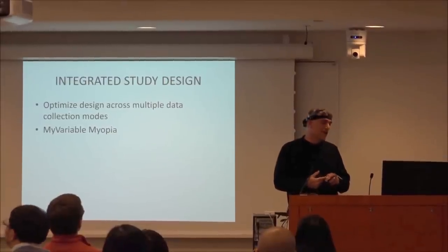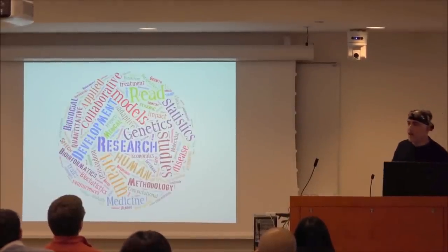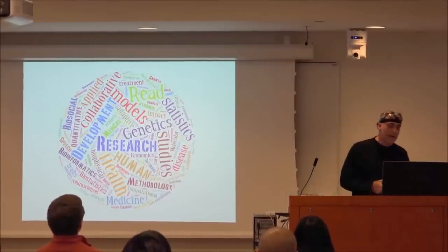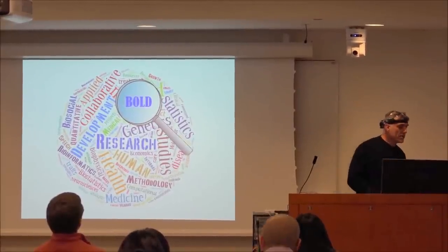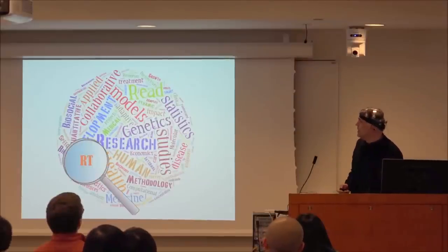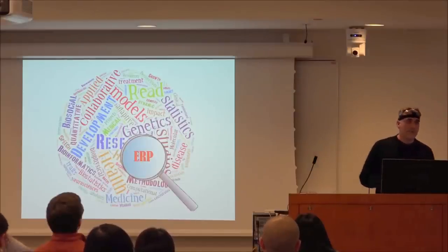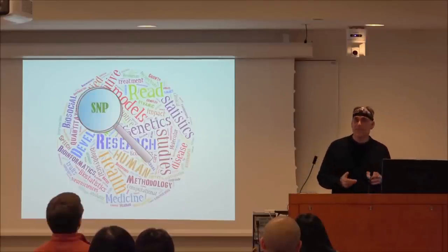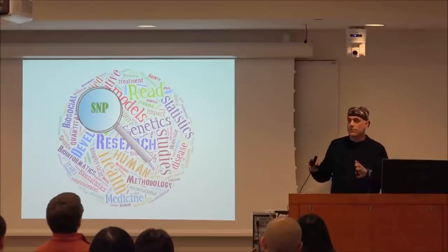There's a symptom I'm calling 'variable myopia' — the focusing on whatever you were trained in. This is a word cloud from the collaborative website. If you're an imager, BOLD is everything. If you're a behavioral researcher in cognition, it's reaction time. If you're Fred Morrison or Bill Gehring, it's ERP. If you're a genetics person, it's SNPs. We tend to focus on a few variables and we're not very good at integrating across variables and making trade-offs.